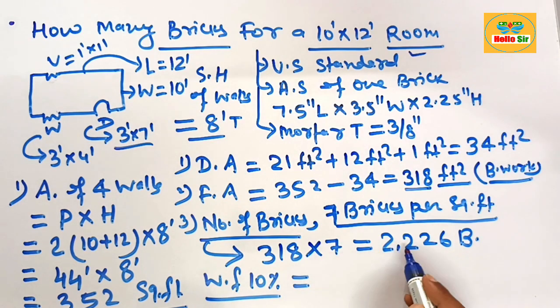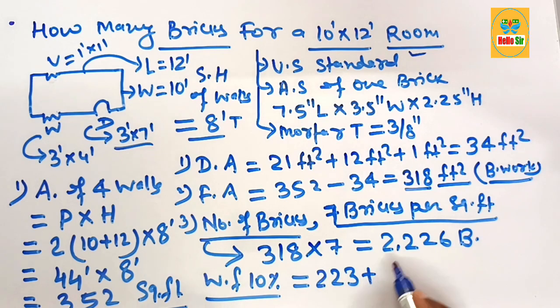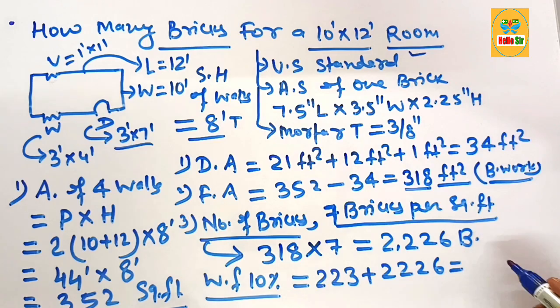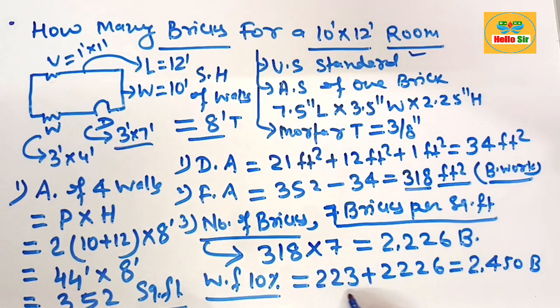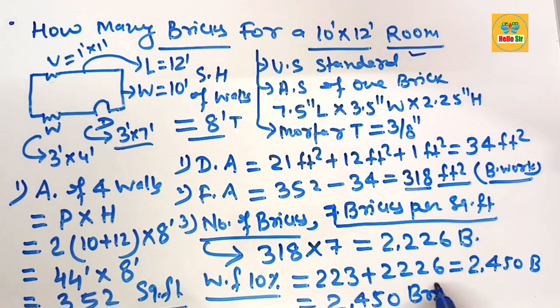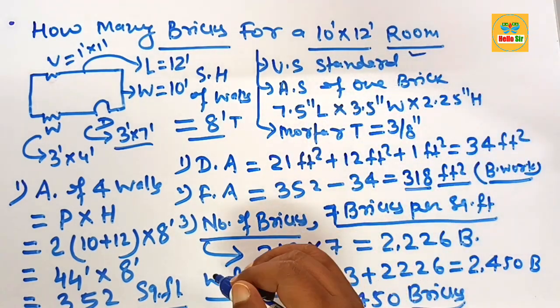Therefore, you need approximately 2,450 bricks to build a 10 foot by 12 foot room. Thank you.